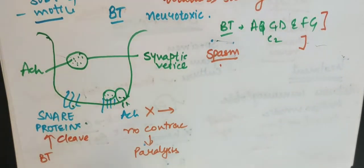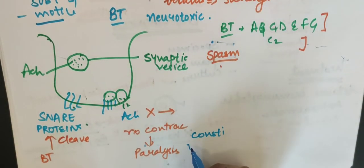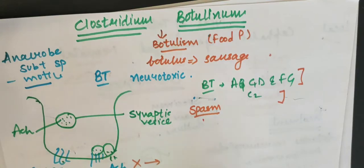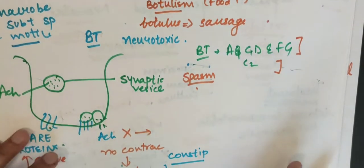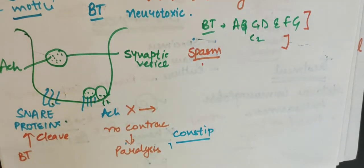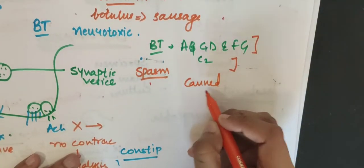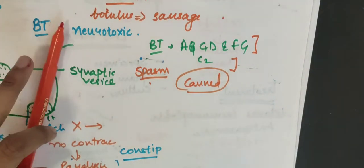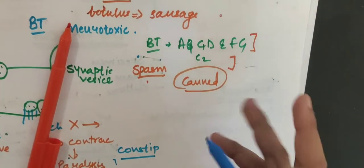Then it leads to constipation. Constipation, not diarrhea. Perfringens causes diarrhea. This is constipation. And this is used as much in infants, and this is used as canned products. Some of these things can grow. These are canned products, and this is consumed as canned products.